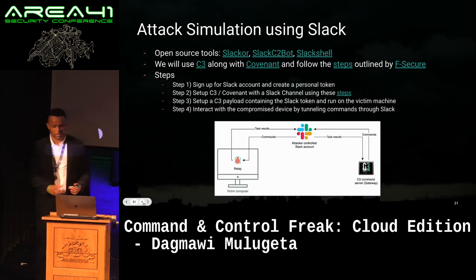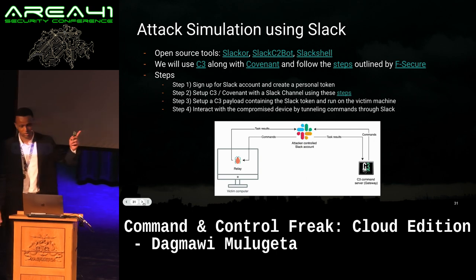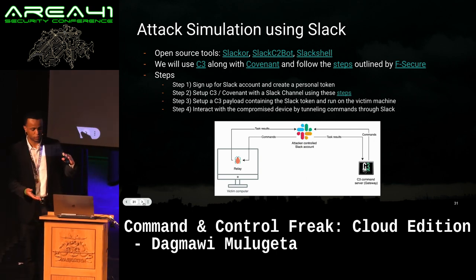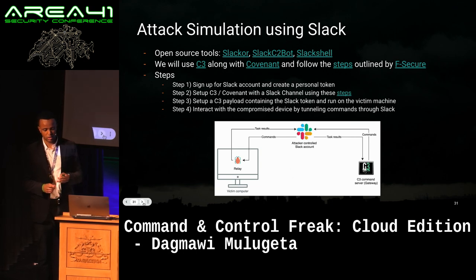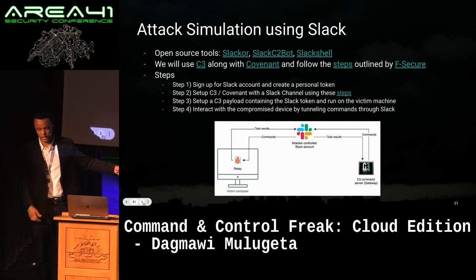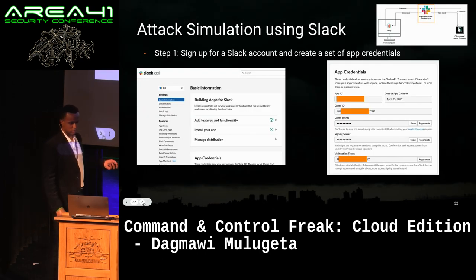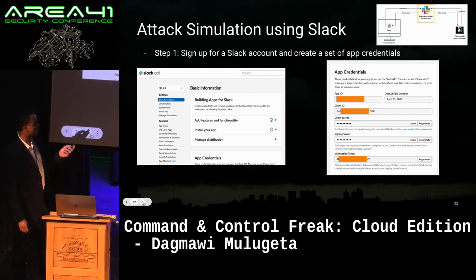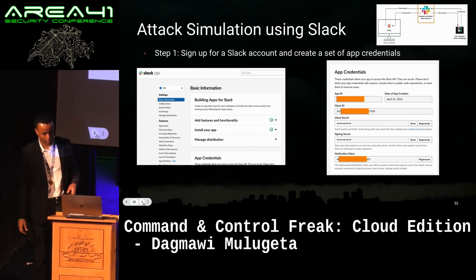To simulate this, you can use tools like Slack C2 bot or Slack shell. In our flow, we're going to use C3 and Covenant, following the steps outlined by F-Secure. We'll follow the same four-step process: create the account, set up C3 and Covenant with the access token, generate a C3 payload, deliver that to the victim, and then interact with the compromised device by tunneling commands through Slack. First, we sign up for a Slack account and then create a set of app credentials via the Slack API.